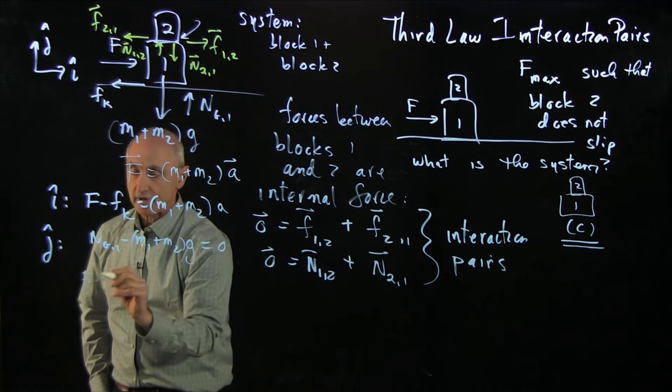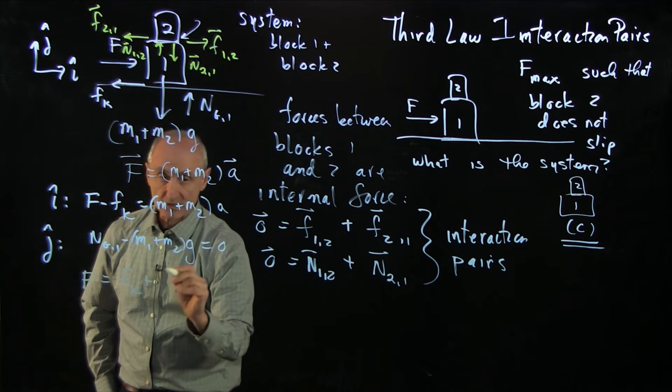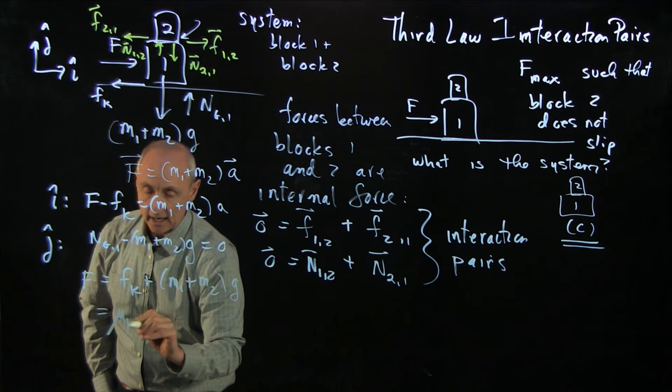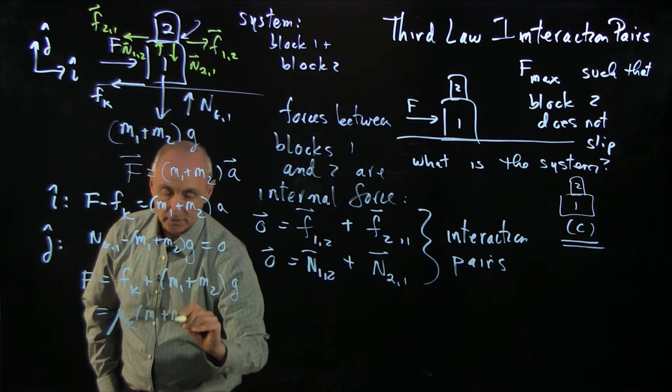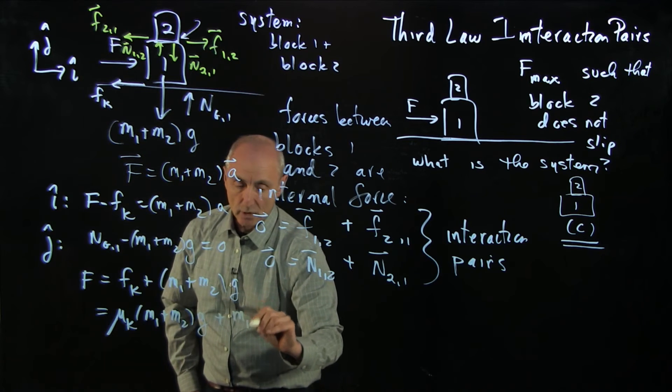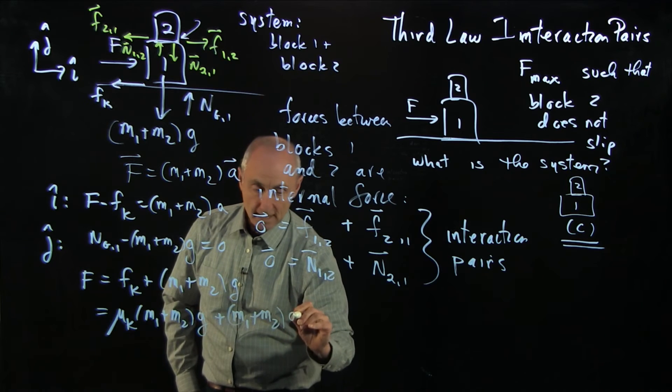Notice that F equals Fk plus M1 plus M2 g. We know this is mu k M1 plus M2 g plus M1 plus M2 g a.